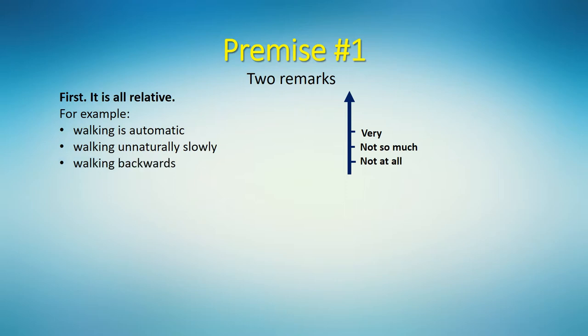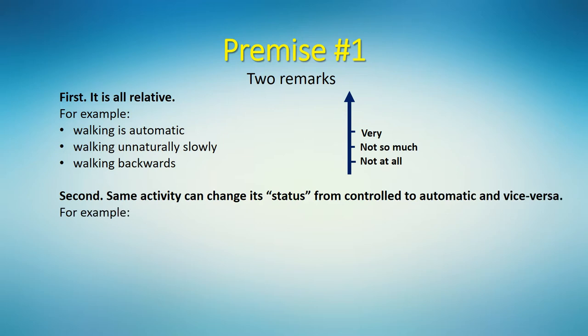Second, can an activity change its status, so to speak, from controlled to automatic and vice versa? Yes, of course. Driving a car, riding a bike, and even walking can be performed in an automatic mode only when the activity is learned. But at the beginning it requires a lot of cognitive effort. On the contrary, breathing is the most basic process, but if you focus on it, it can become controlled.